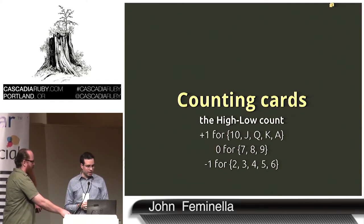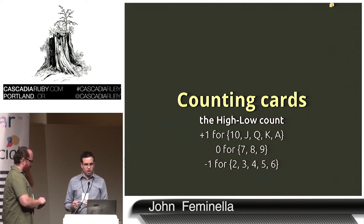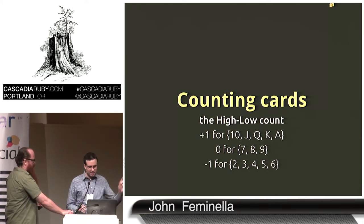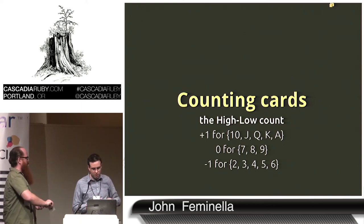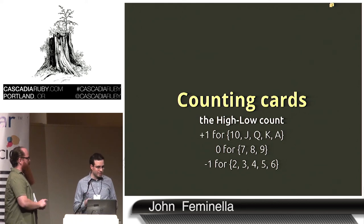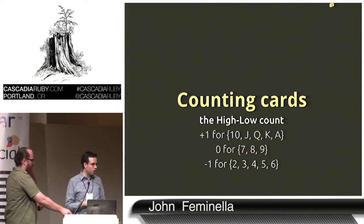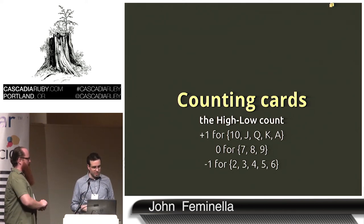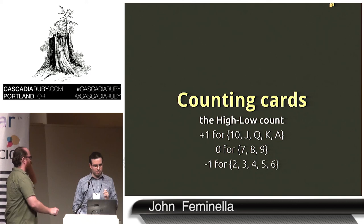The cards we don't care about so much are the 7, 8, 9. The cards better for us to come out are 2, 3, 4, 5, 6. It's minus 1, 0, and plus 1. Every time you see a 10, jack, king, queen, or ace come out, increment a counter in your head — starting at 0 — by negative 1. If you see a 7, 8, 9, don't do anything. If you see 2, 3, 4, 5, 6, increment the counter by plus 1.